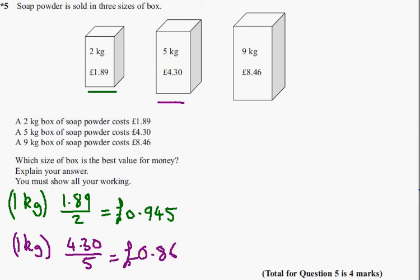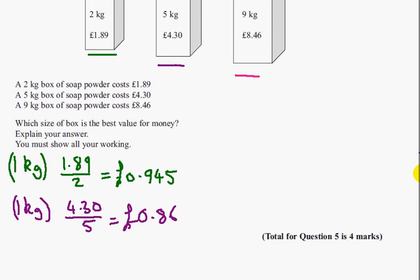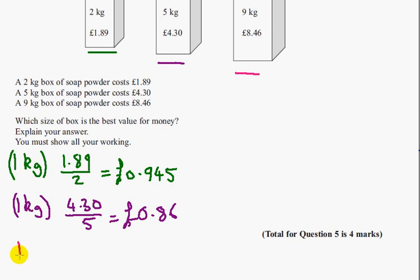And the last one, the biggest one, 9kg for £8.46. So 1kg is going to be £8.46 divided by 9.